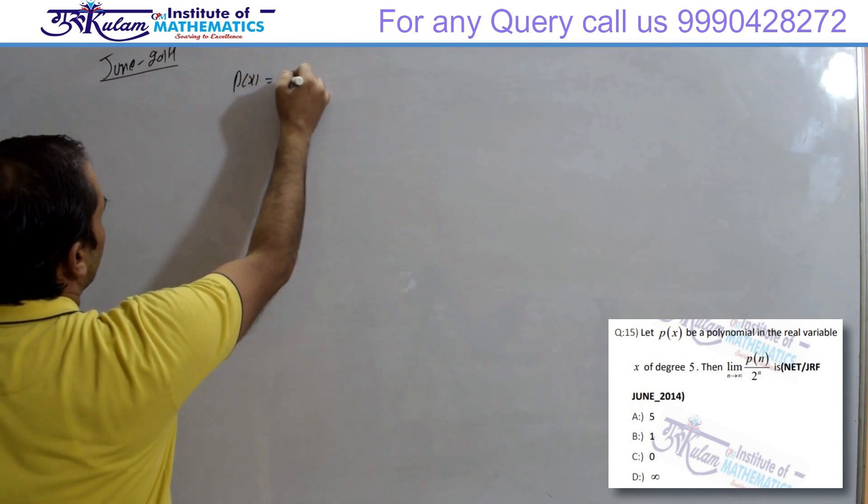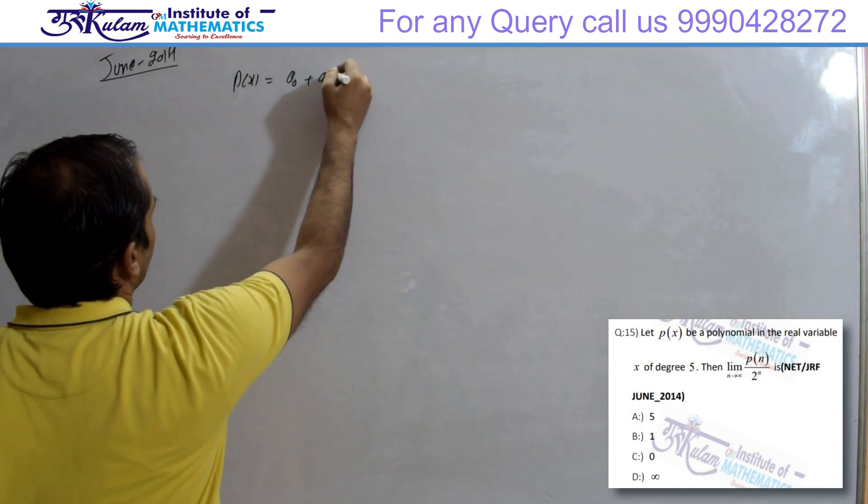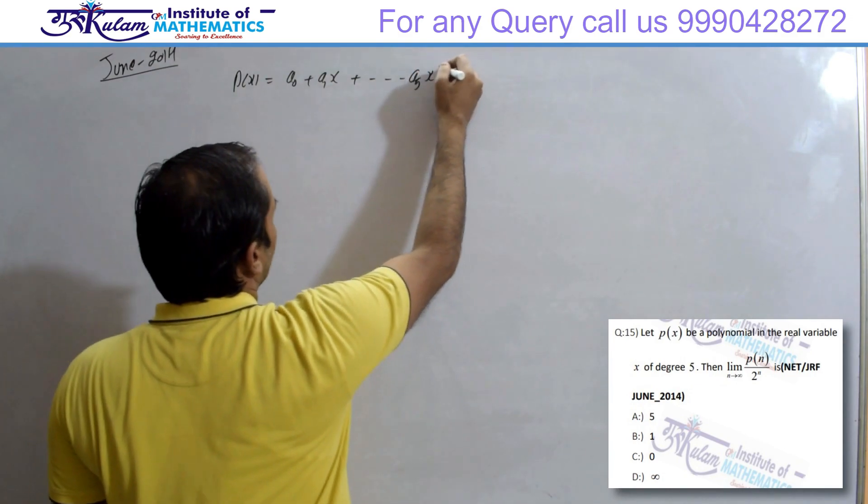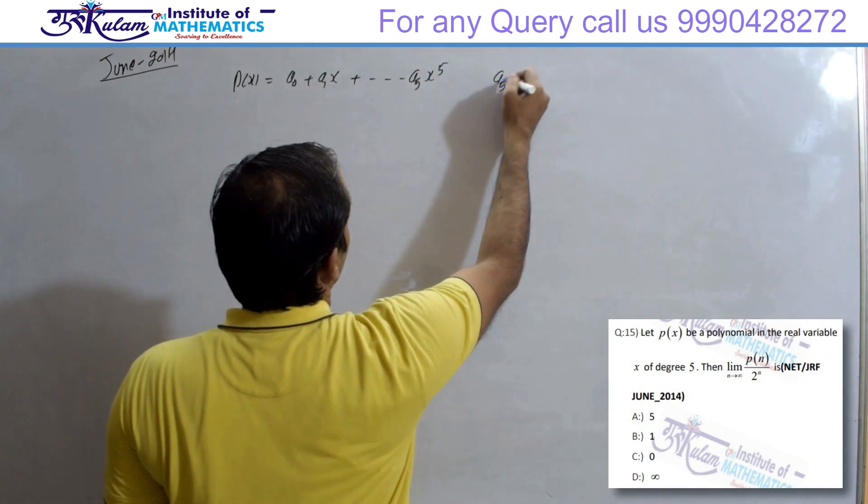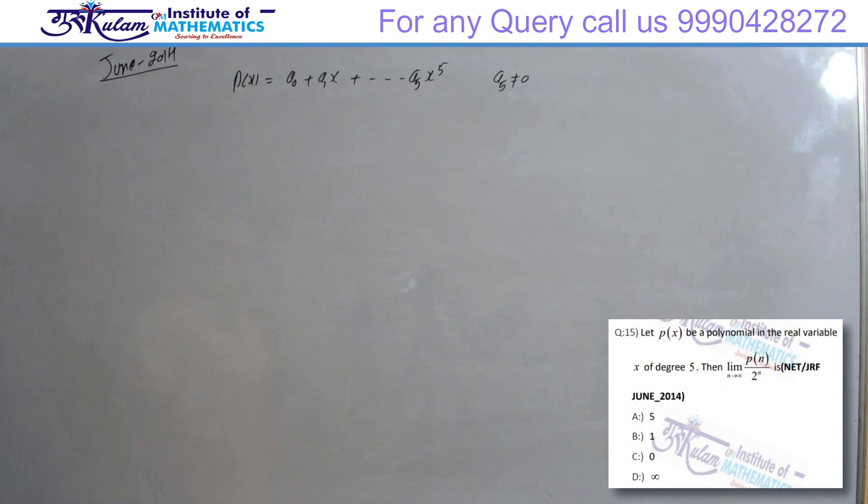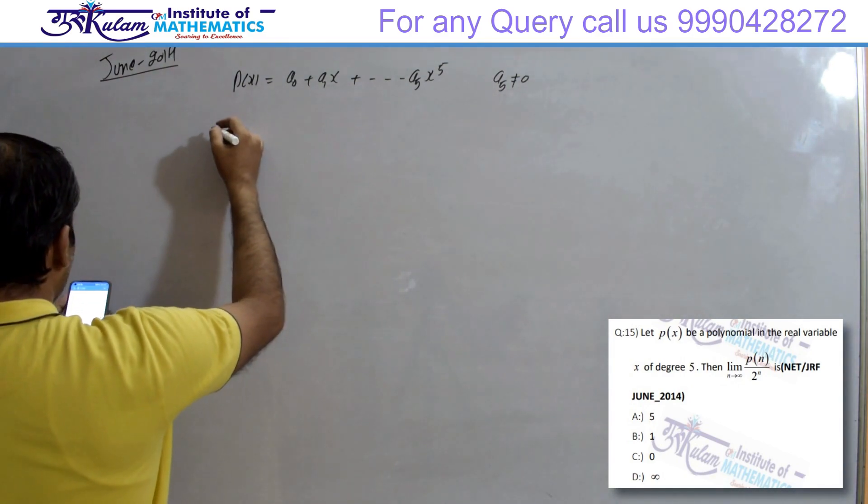So P(x) be a polynomial which is A0 plus A1x plus A5x to the power 5. Degree 5 का polynomial है, real coefficients है, तो A5 definitely non-zero given होगा. ठीक है?